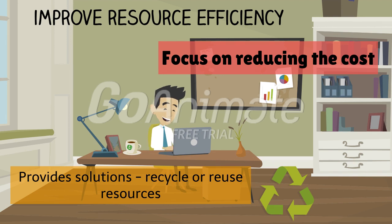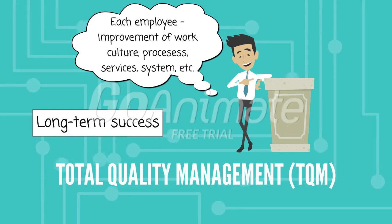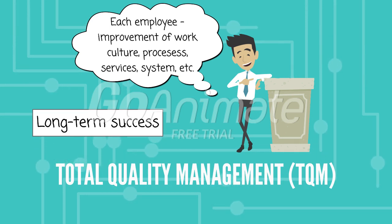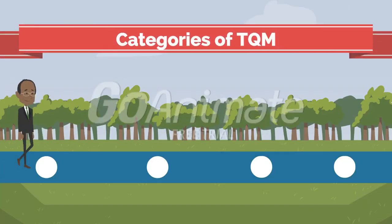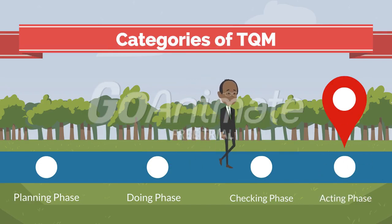Let's talk about Total Quality Management, or TQM. The definition is to ensure that every single employee is working towards the improvement of work, culture, processes, services, systems, and so on, to ensure long-term success. There are four categories in TQM: the planning phase, doing phase, checking phase, and acting phase.